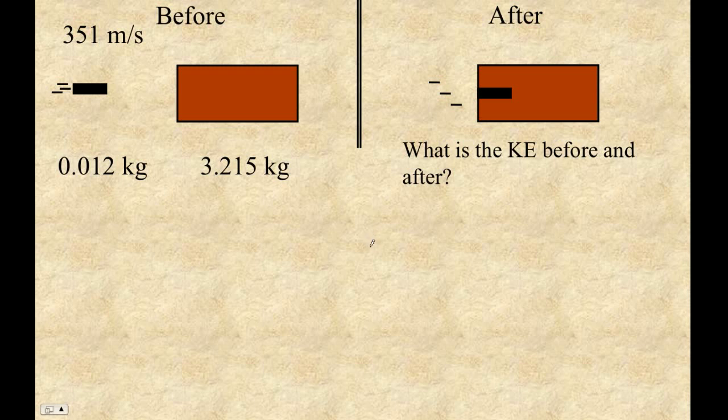Let me show you how to solve problems that have energy and momentum in them. The first concept we need to look at is something called an inelastic collision. Inelastic collisions are ones where energy is not necessarily conserved. So here we've got this problem with the bullet's velocity, and the question is what's the kinetic energy?